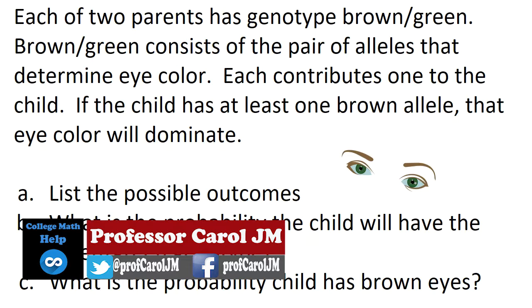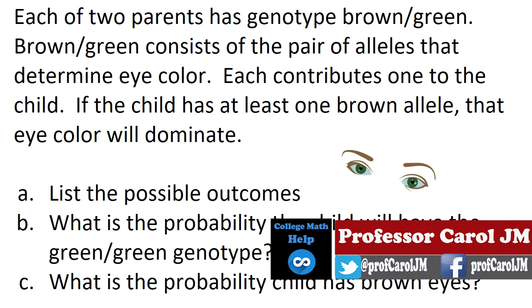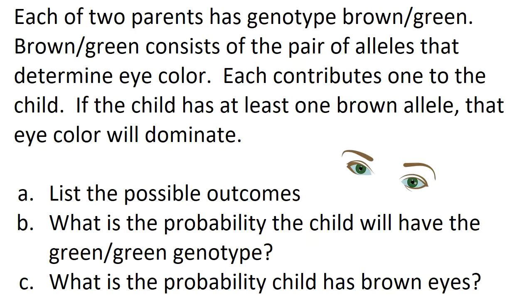If the child has at least one brown allele, that eye color will dominate. We want to think through the possible outcomes, find the probability that the child will have the green-green genotype, and find out what's the chances that the child has brown eyes.